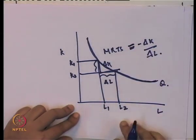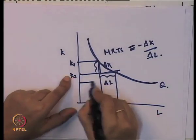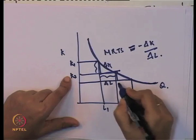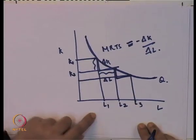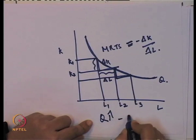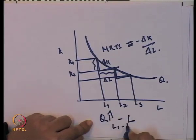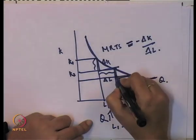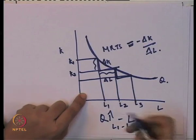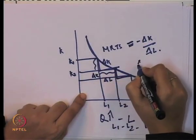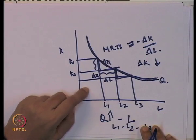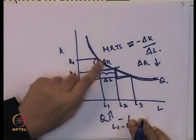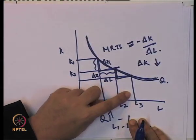The marginal rate of technical substitution, which is the slope of the isoquant, goes on decreasing as the producer increases one input. If we increase quantity by changing L from L₁ to L₂ and again L₂ to L₃, the amount of K the producer is willing to sacrifice to increase L goes on decreasing. The change in K keeps decreasing, so the MRTS is diminishing and the isoquant follows a convex shape because the slope is decreasing.